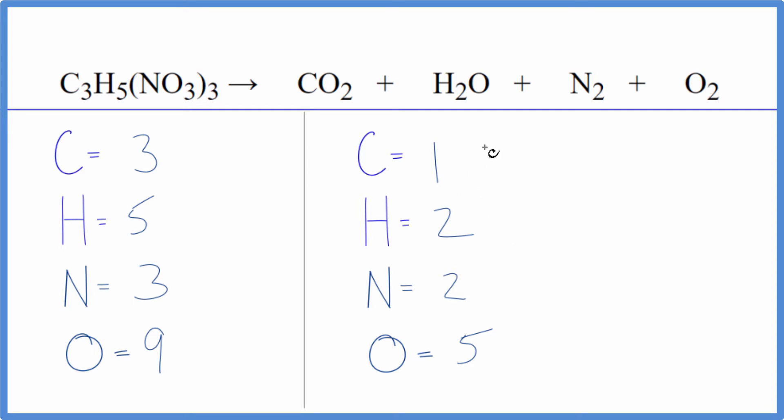So before I did this video I balanced this and what I ended up doing was I tried to balance the carbon and some other things and I realized I need to have this as an even number. So we're gonna start there. What I did was I put a two in front of the trinitroglycerin, the C3H5(NO3)3. That's gonna get me an even number of hydrogens.